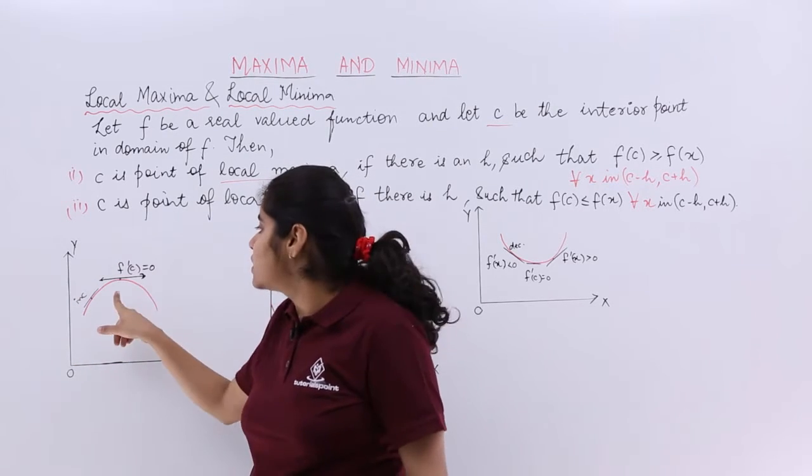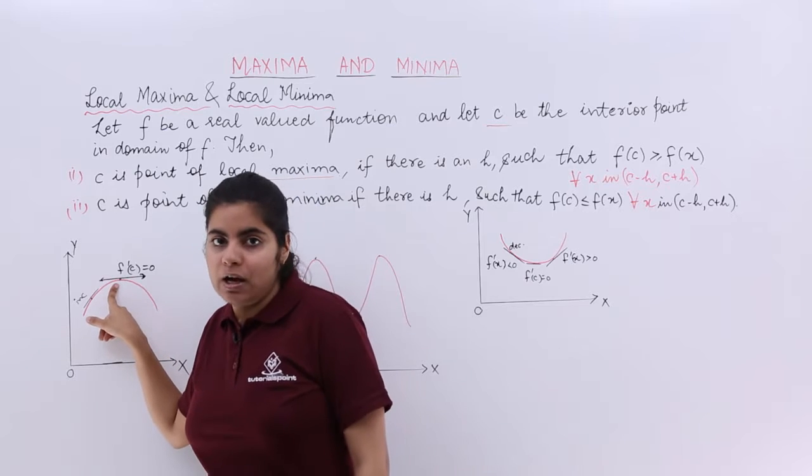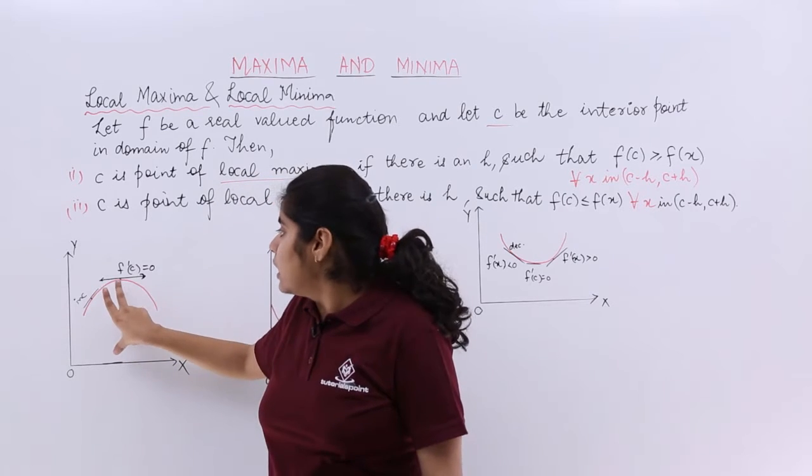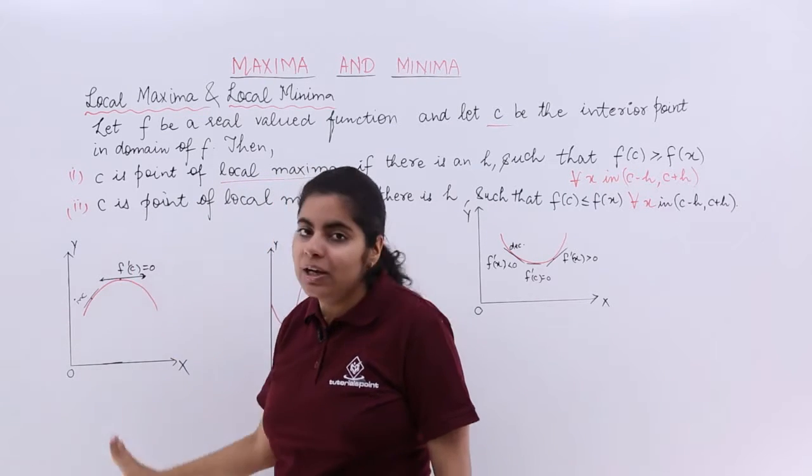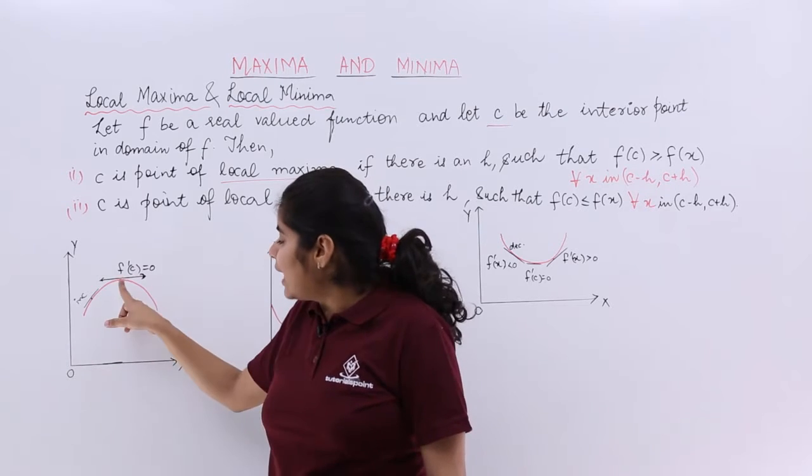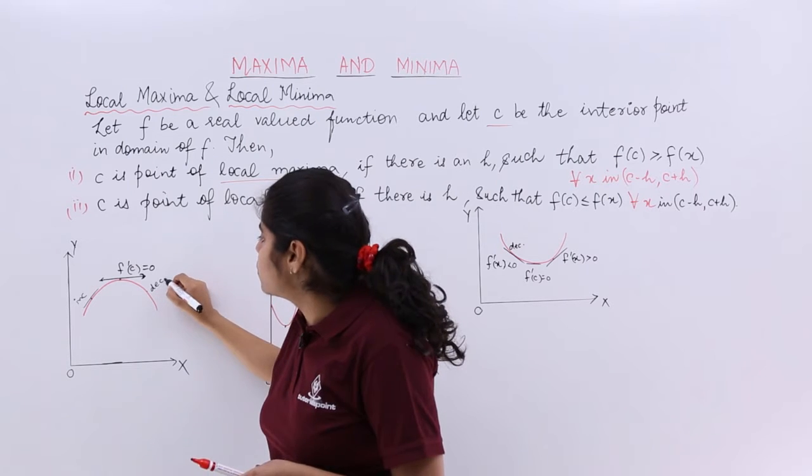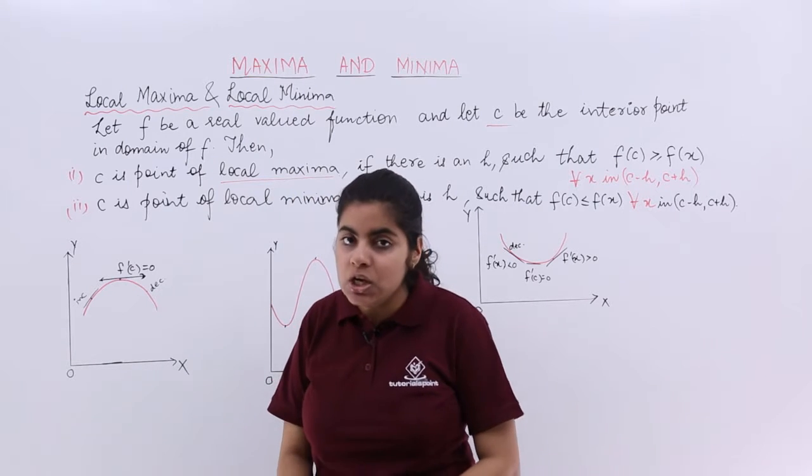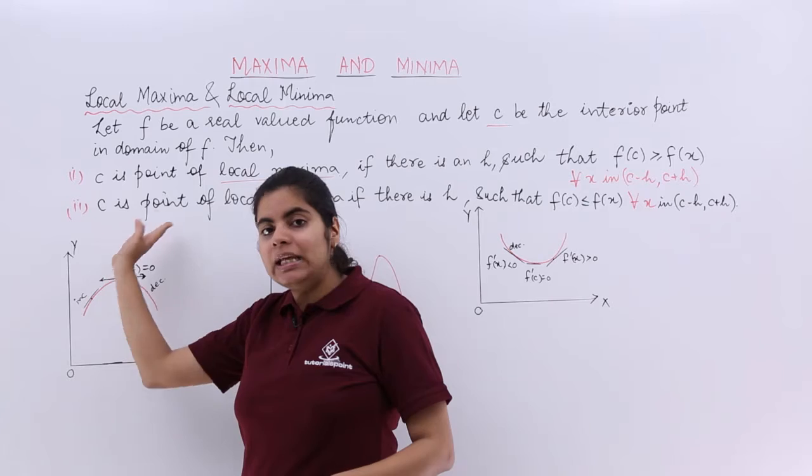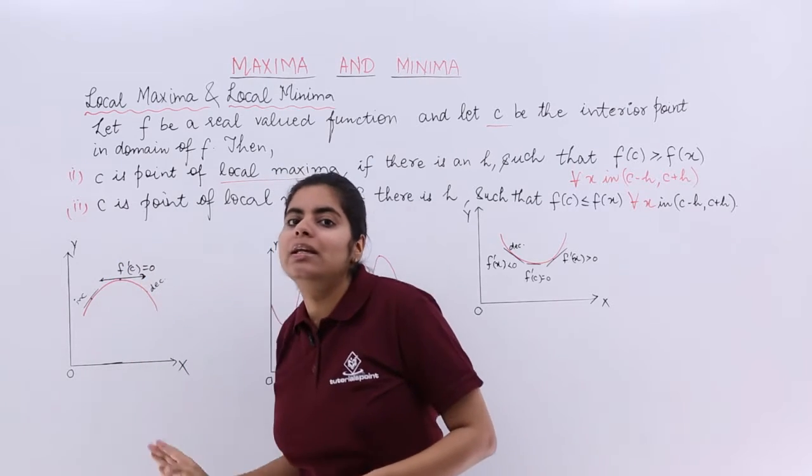Then a point comes when it is the peak of the graph wherein the graph attains the maximum value. So it is the maxima and then again it goes down and here if I have to draw a tangent, I can find it goes down. So it is decreasing. So it increases, then it attains a peak value, then it decreases.